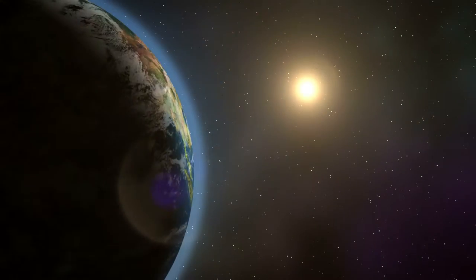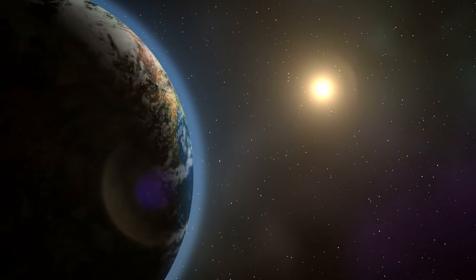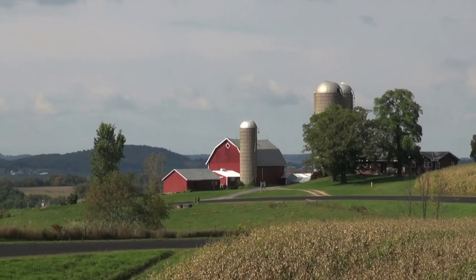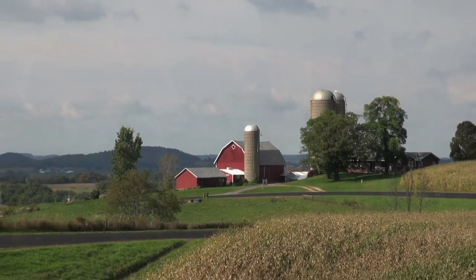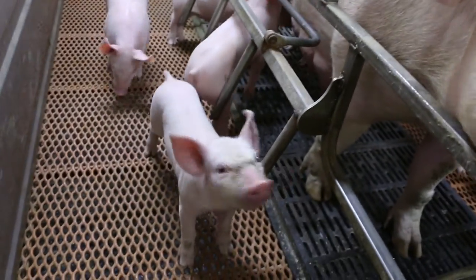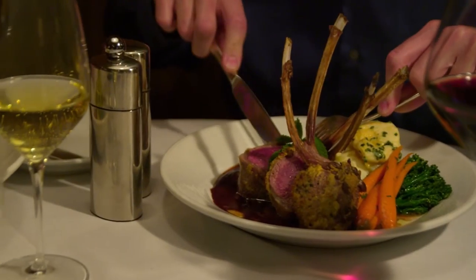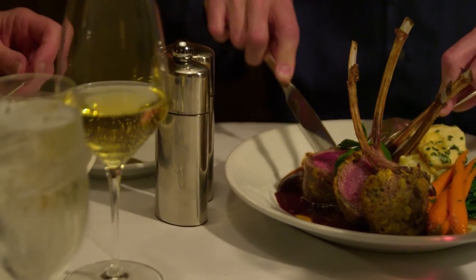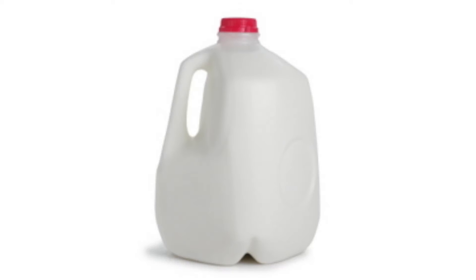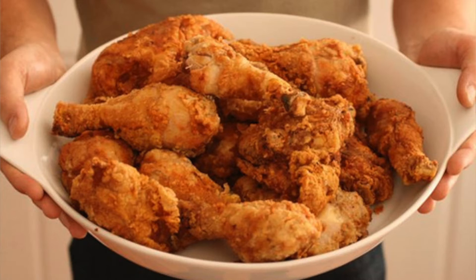Scientists agree the major driver behind the rise in global greenhouse gas emissions is human activity. How does farming fit in? What is the contribution of animal agriculture, and how are these values calculated? The consuming public is more and more interested in where their food comes from — what's the carbon footprint of a gallon of milk, a pound of beef, or a pound of chicken meat?